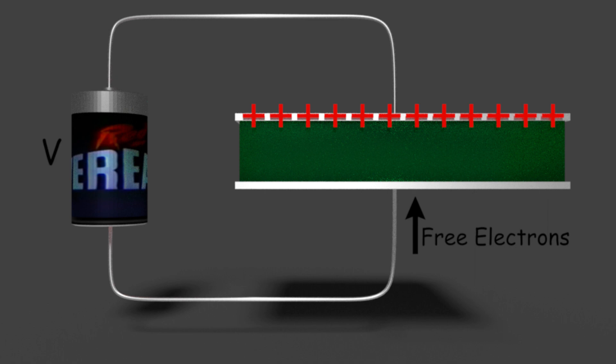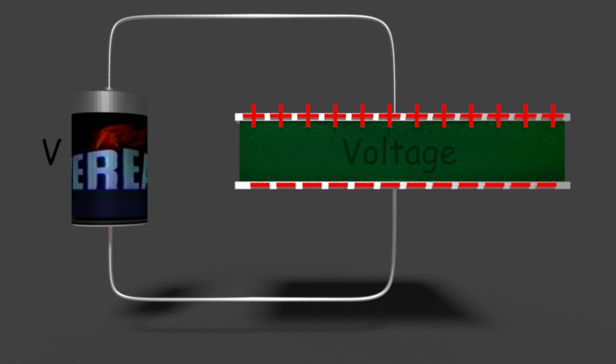At the same time, due to attraction of the positive plate, free electrons from the battery will be accumulated in another plate. In other words, it can be said that there is a negative charge accumulation at the plate which is connected with the negative terminal of the battery. As there is a difference in polarity of charge between the two plates, there would be a potential difference or voltage existing between the plates.